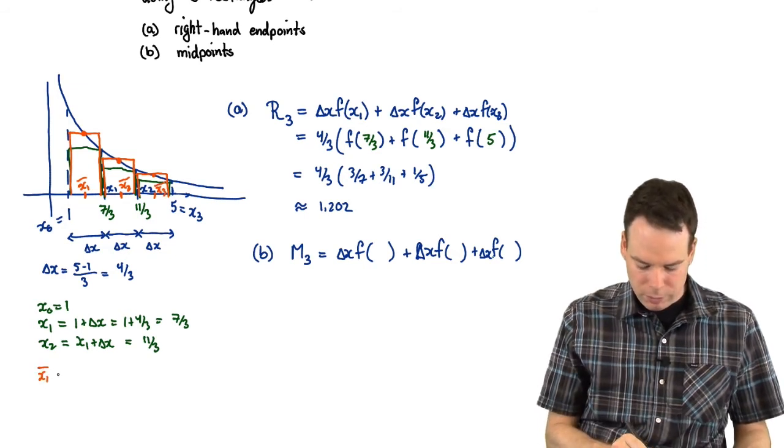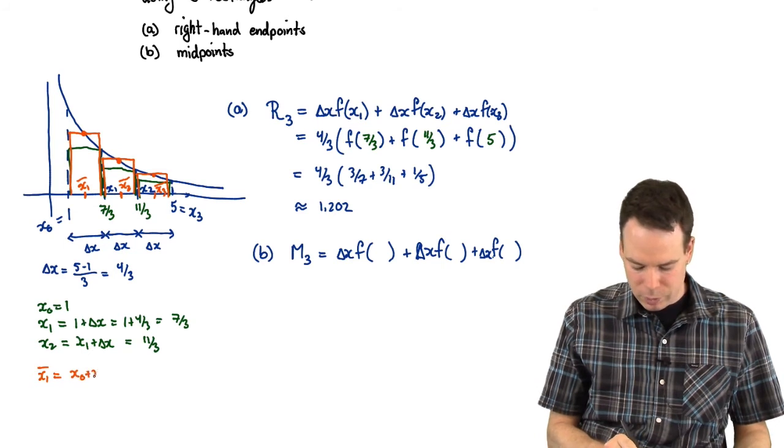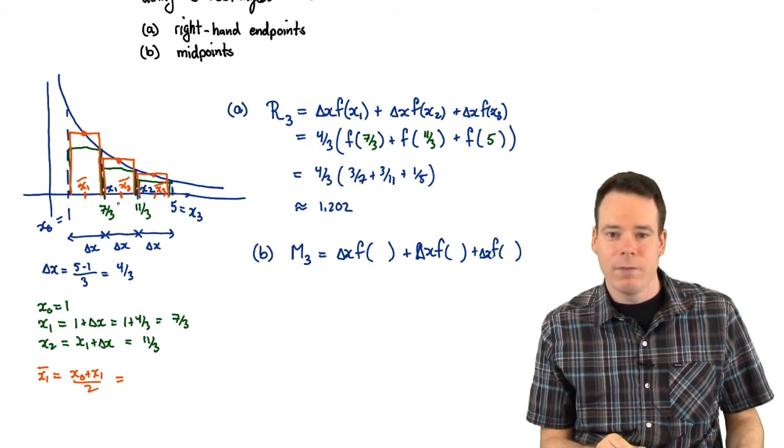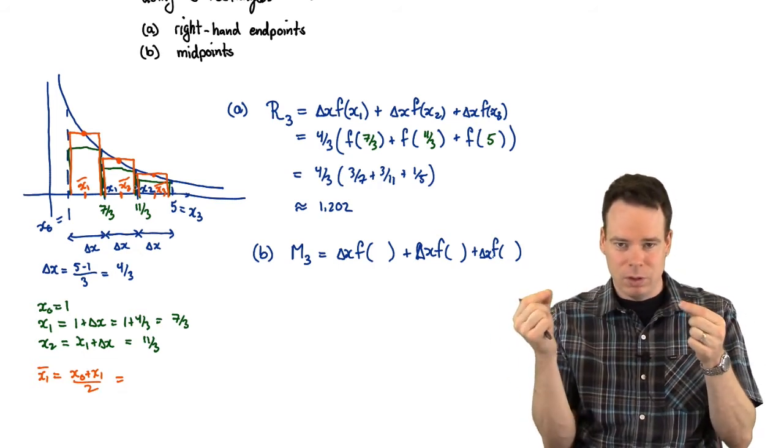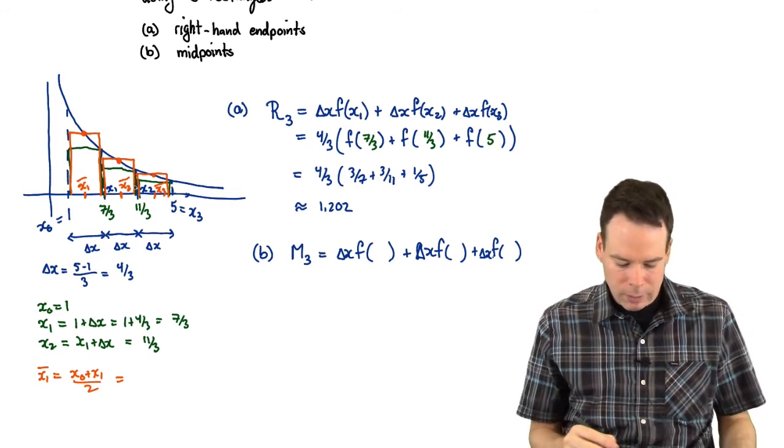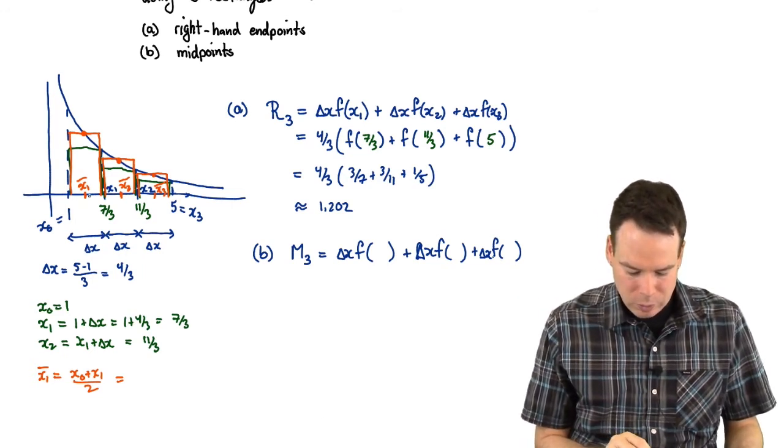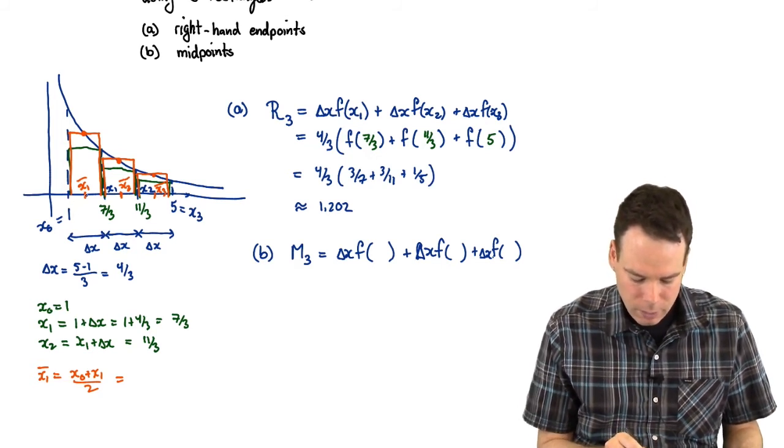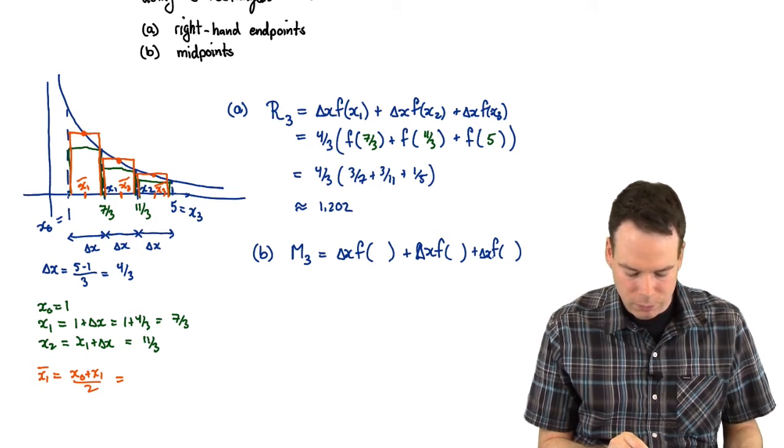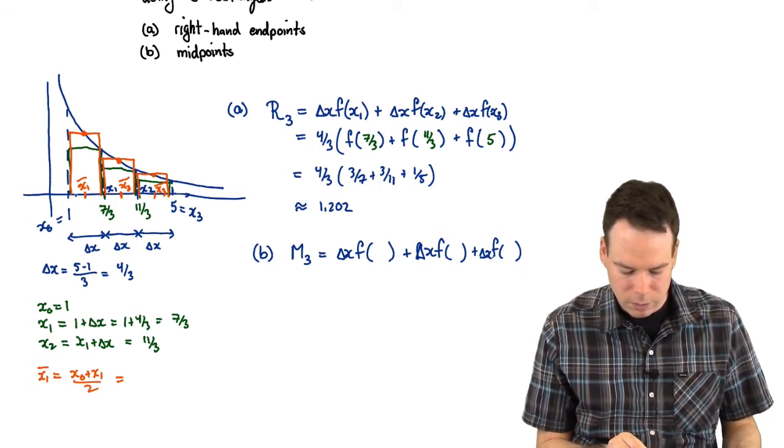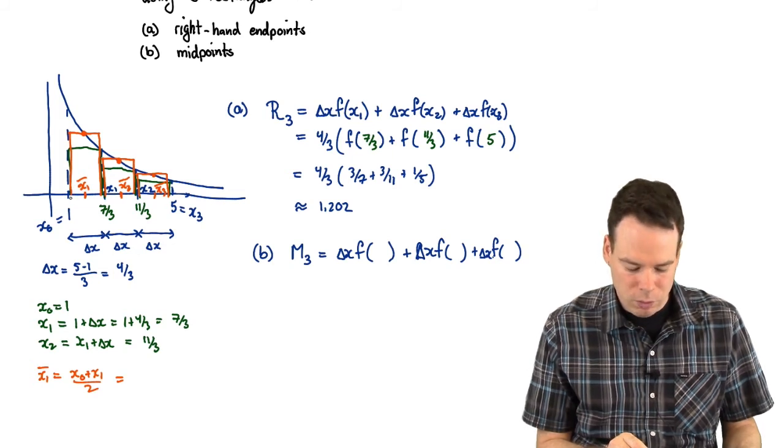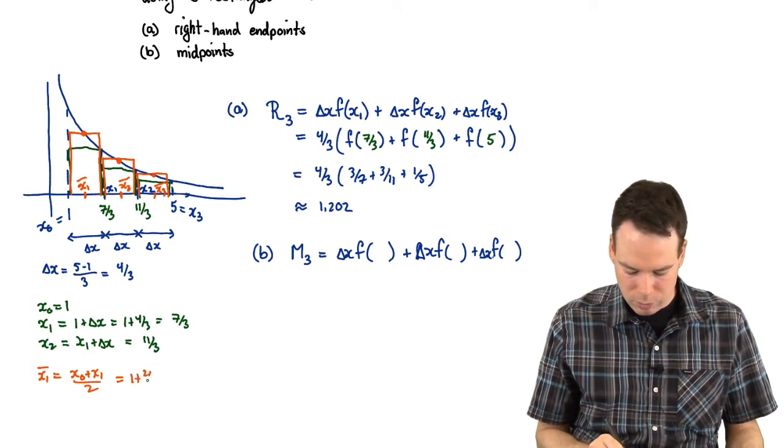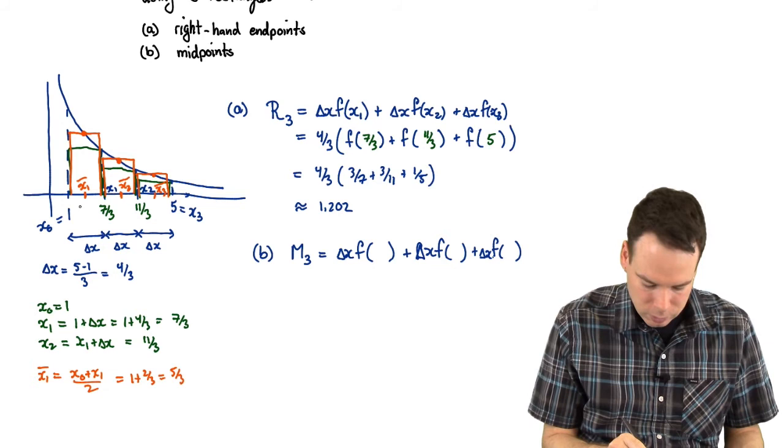What we usually call these midpoints is x sub 1 bar, x sub 2 bar, and this would be x sub 3 bar. x sub 1 bar is the midpoint of the first interval. We get it by x sub 0 plus x sub 1 divided by 2. Similarly for the next one, it's just the average of the endpoints. The midpoint of an interval is the average of the two endpoints. There is a more intuitive way to get that. If you just look at the diagram, x sub 1 bar should be the midpoint of the interval. We know that the full width of that interval is 4 thirds. So x sub 1 bar should be only 2 thirds of the way along. So it should be 1 plus 2 thirds, or in other words, 5 thirds. So that's 5 thirds.